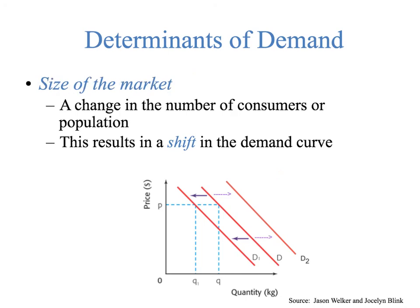The size of the market: a change in the number of consumers or population. If there is a massive war and there are fewer people, demand for all products at all price levels shifts inward. Likewise, a huge population boost might shift it outward. For example, in the market for walkers — used by people getting older for balance — if your population is getting older, there's going to be an increase in demand for walkers at every single price level, resulting in an outward shift of the demand curve.